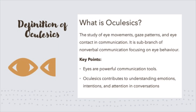Let's begin with the definition. Oculasics is the study of eye behavior — essentially how we use our eyes to communicate. As a sub-branch of non-verbal communication, oculasics examines things like eye contact, eye movement and gaze patterns. It is an essential part of multimodal communication, which is when multiple modes or channels, such as spoken words, gestures and visual cues, are used to communicate a message.